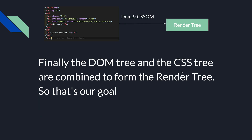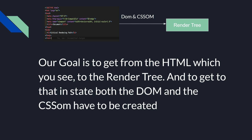Finally, the DOM tree and the CSSOM tree are combined to form the render tree. So first the HTML parser parses the HTML and converts it into the DOM. Simultaneously, the style data is also parsed by the rendering engine to convert it into a CSSOM. These two trees then combine to form the render tree — that is our goal.